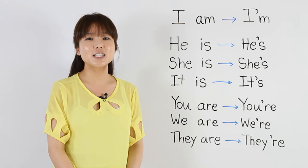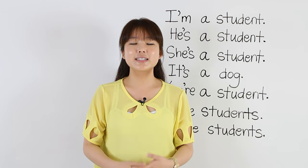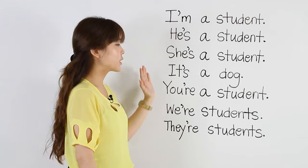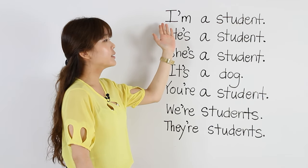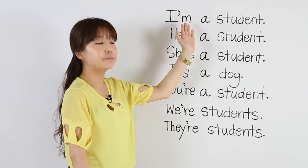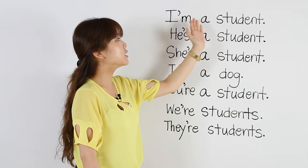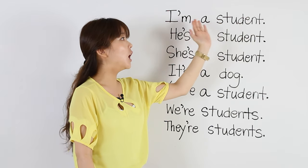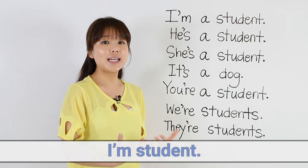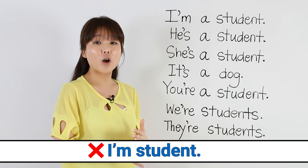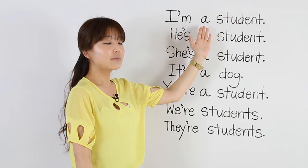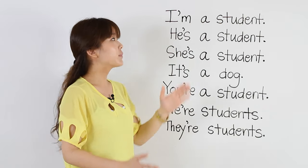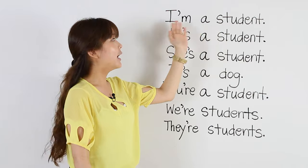Let's take a look at some sentences using the be verbs. Notice on the board I've only used contractions. For example, instead of I am, I'm going to say I'm. So the first sentence: I'm a student. Many people make the mistake of saying I'm student, but that's wrong — you have to put 'a'. Now, I'm a sounds like one word. I'm a. I'm a student. Please repeat: I'm a student.